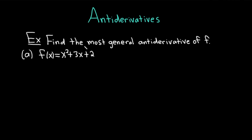The question says to find the most general antiderivative of f. In part a, we have the function f of x equals x squared plus 3x plus 2. Let's work through it.